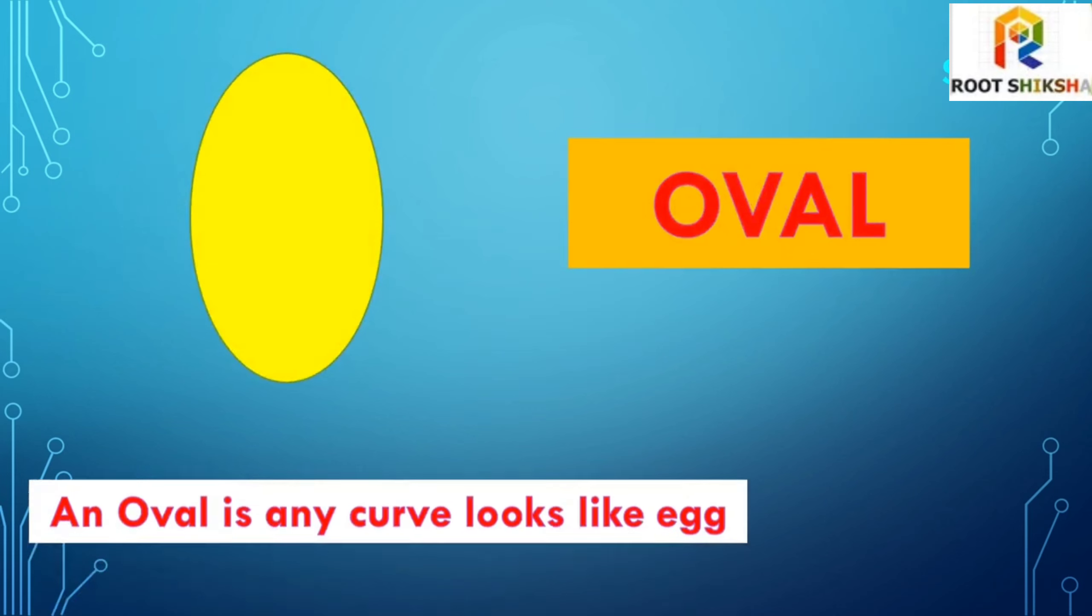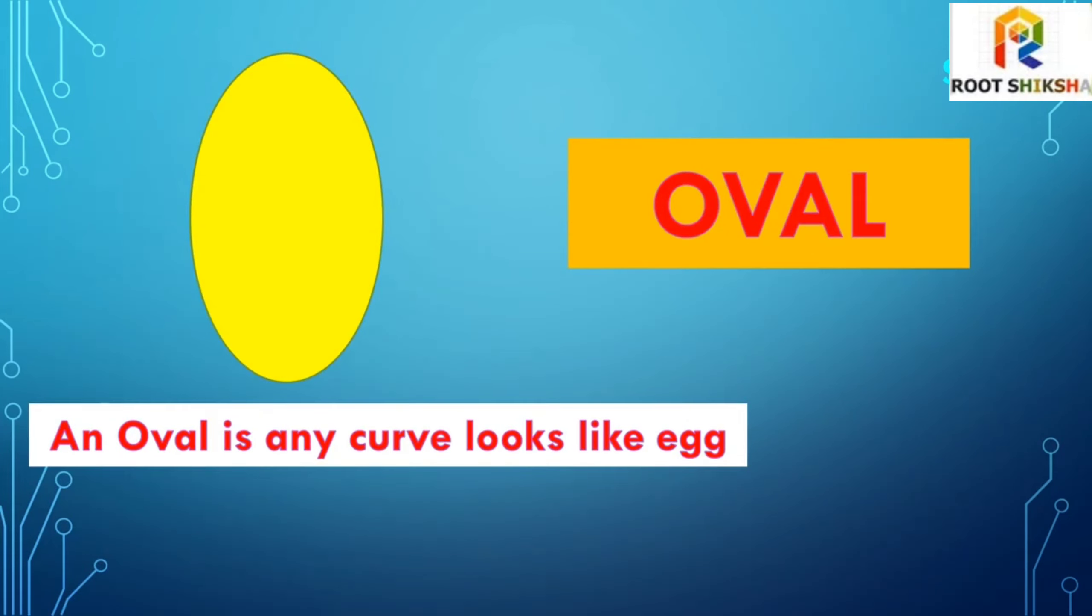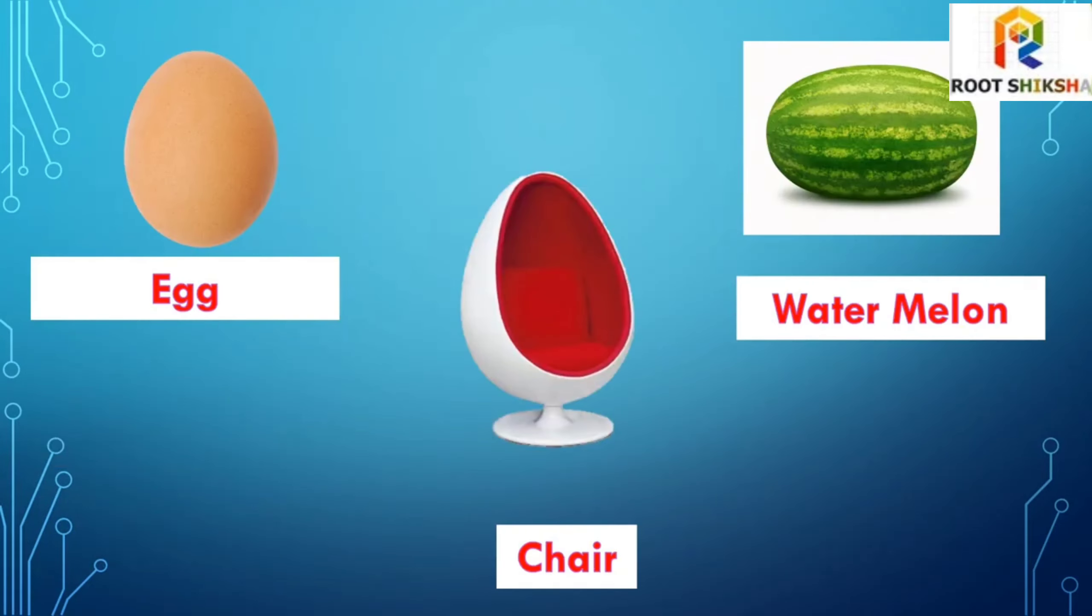Oval. An oval is any curve that looks like an egg. For example: egg.